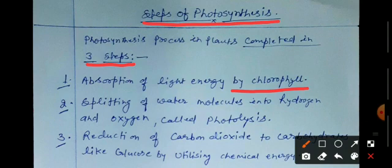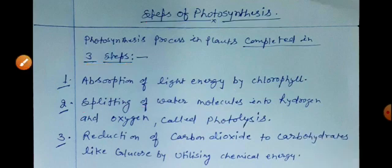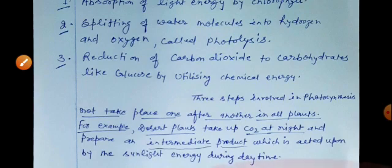The second step is splitting of water molecules into hydrogen and oxygen. This process is called photolysis. In presence of sunlight, water molecules break up into hydrogen. That hydrogen combines with carbon dioxide to produce carbohydrate.